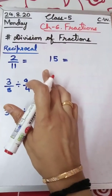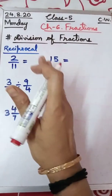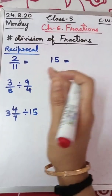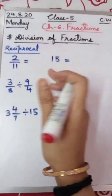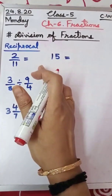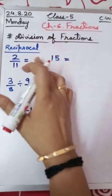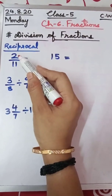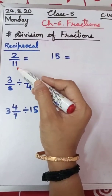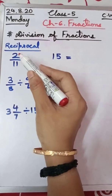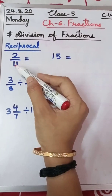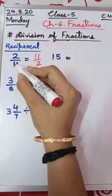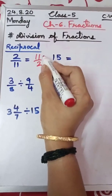Before going to division of fractions, we should understand a concept called reciprocal. Reciprocal is just like writing the opposite — right, left; night, day; come, go. Similarly in maths, the opposite means reciprocal. In a fraction, reciprocal means the numerator will become the denominator and the denominator will become the numerator. So here, 2 by 11 — reciprocal will be 11 by 2.